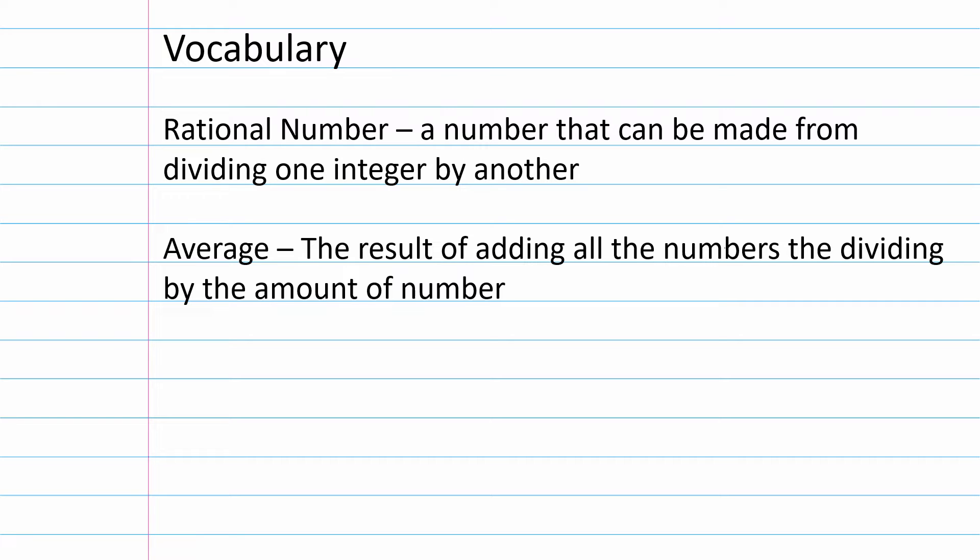We're going to begin with some vocabulary. A rational number is a number that can be made from dividing one integer by another, something like 5/2—two integers that are being divided.